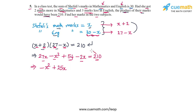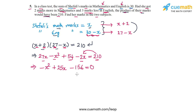Bringing 210 to the left-hand side gives 54 minus 210, which is negative 156. So we get negative x squared plus 25x minus 156 equals 0. Multiplying both sides by negative 1, we get x squared minus 25x plus 156 equals 0.